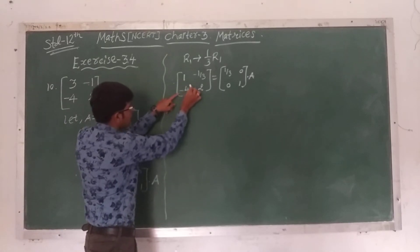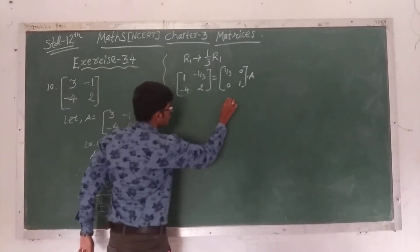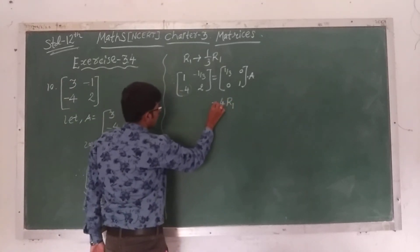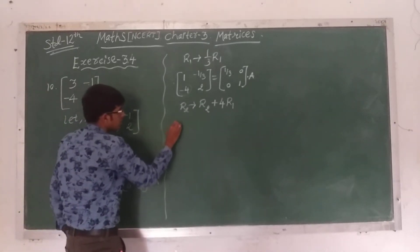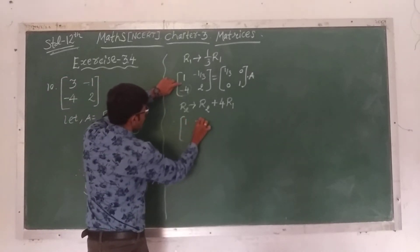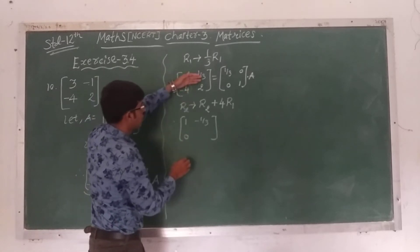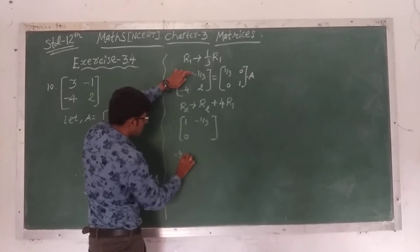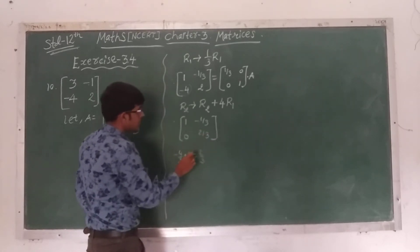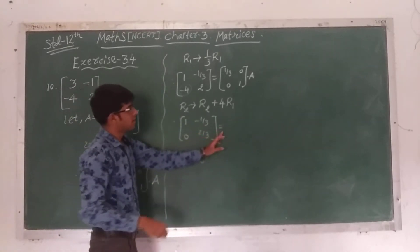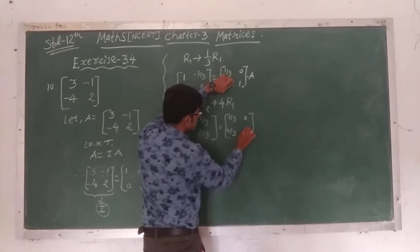Next, we have to make the A(2,1) element equal to 0. So we have to multiply the first row by 4 and add to the second row: R2 tends to R2 plus 4R1. This gives: first row [1, -1/3], second row: -4 + 4×1 = 0, and -4/3 + 2 = -4/3 + 6/3 = 2/3. On the right hand side, first row as it is [1/3, 0], second row: 4/3 + 0 = 4/3, and 1 as it is. So the matrix becomes [1, -1/3; 0, 2/3] = [1/3, 0; 4/3, 1] times A.